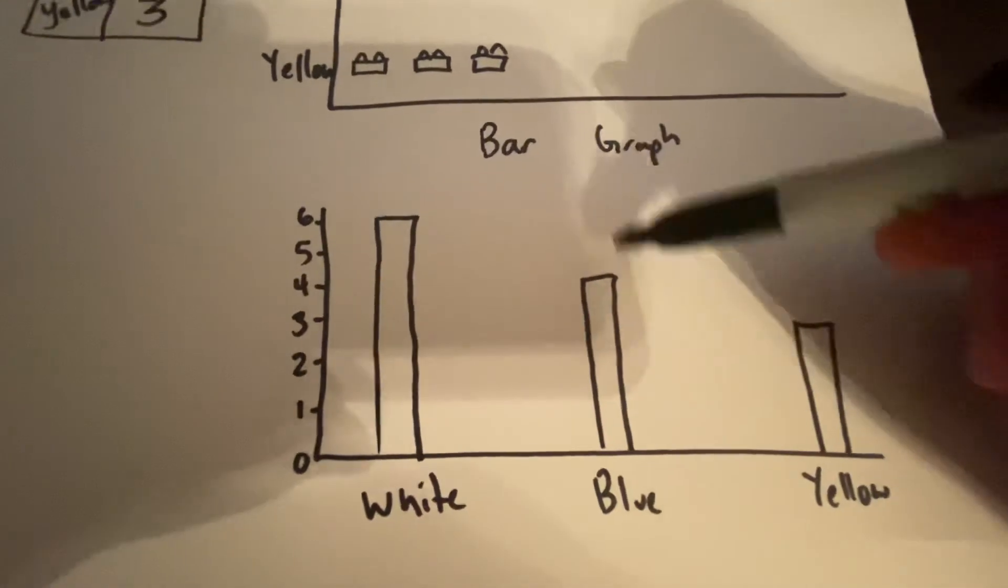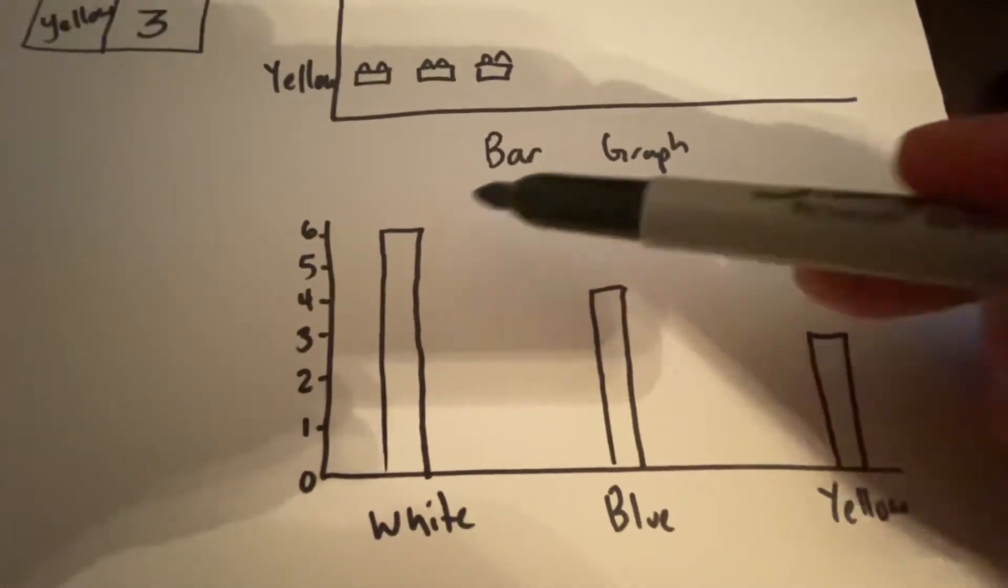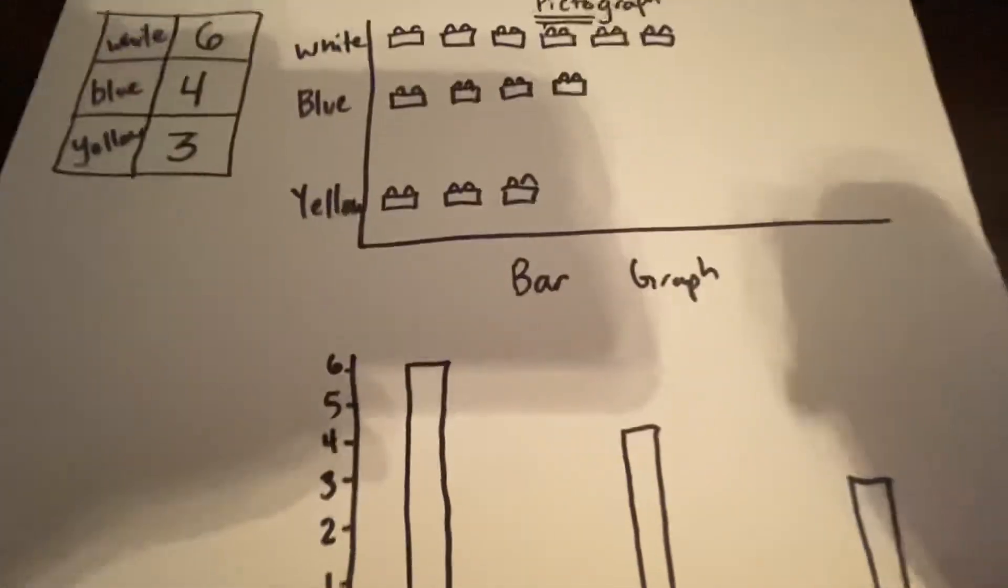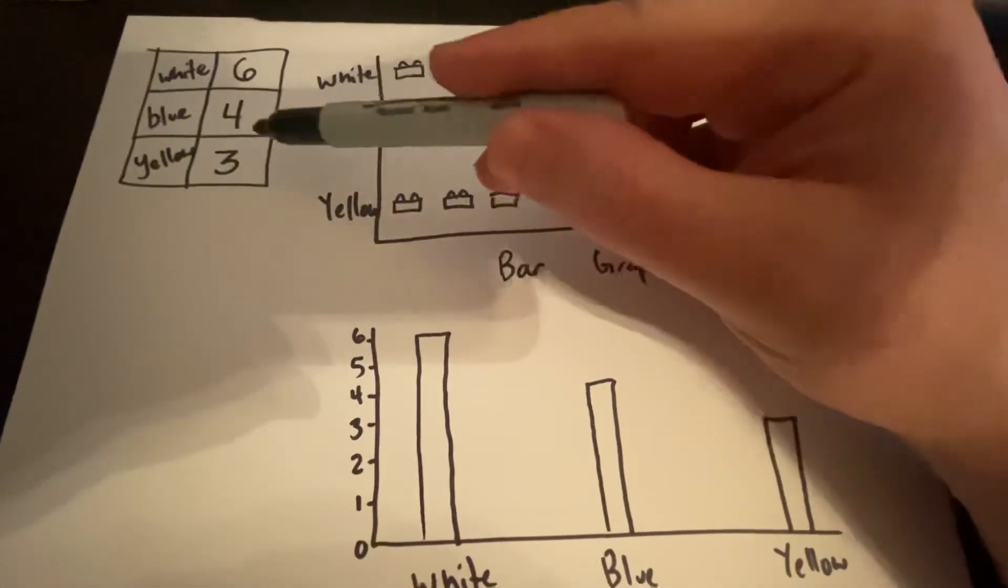The bar graph is vertical. Same thing. Bar graphs are normally vertical, but you can set up a bar graph so it's going horizontal. But both of these are just representations of data.